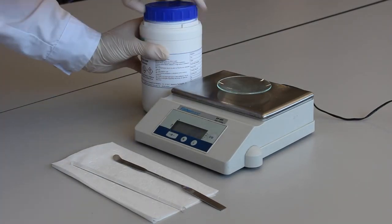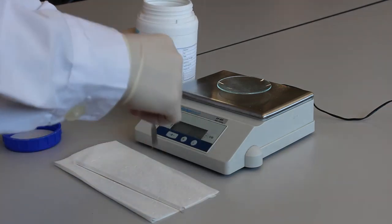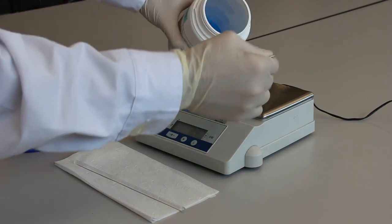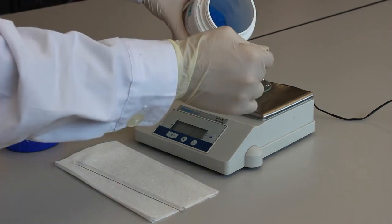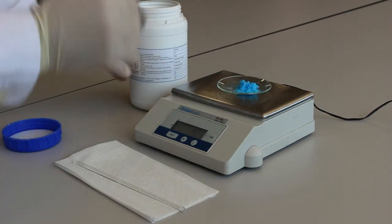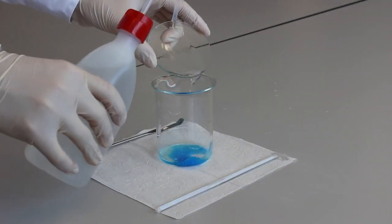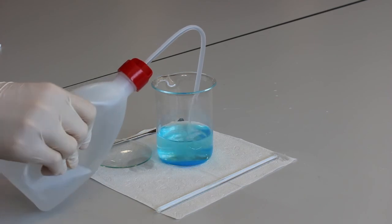First, we used a balanced end spatula to prepare a dilute solution of copper sulfate. We prepared 4 grams of the compound and then added 250 milliliters of distilled water. The simplest ion that copper forms in solution is the typical blue hexa-aqua copper ion.